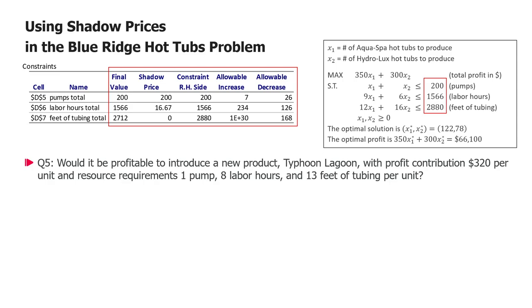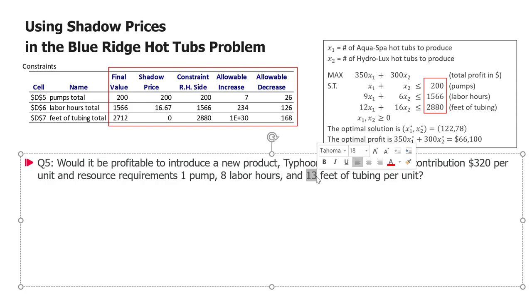So first of all, consider this. This is like another product for this product mix. We could actually define a third decision variable, some X3, and we could add it here, like a third column in this model. We could say there will be plus 320 X3. There will be plus X3 here in the pumps because every Typhoon Lagoon consumes one pump. There will be eight labor hours, eight times X3 in the labor hour constraint, and 13 times X3 in the third constraint, feet of tubing.